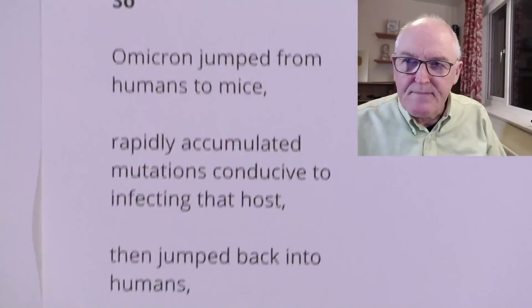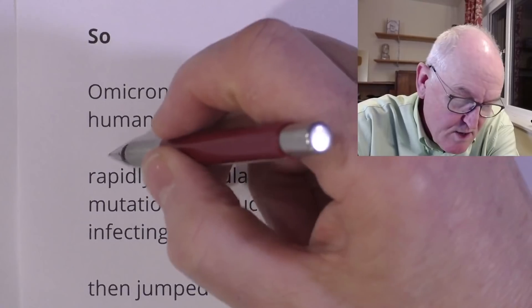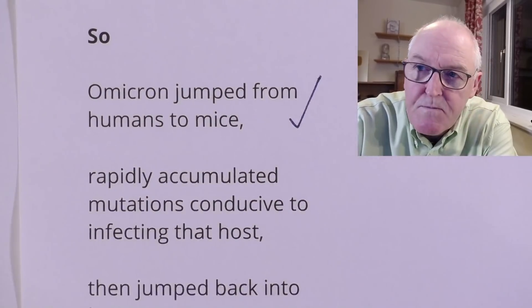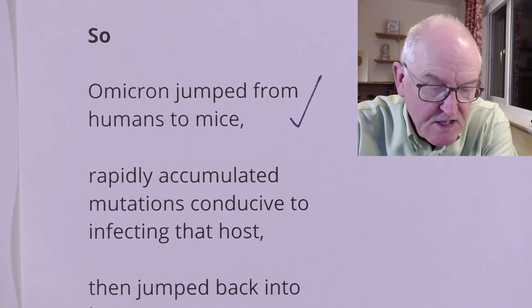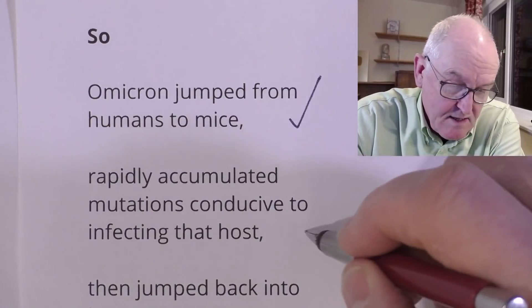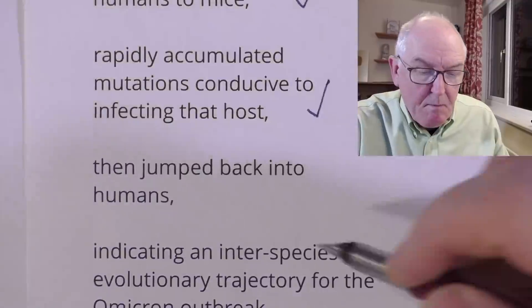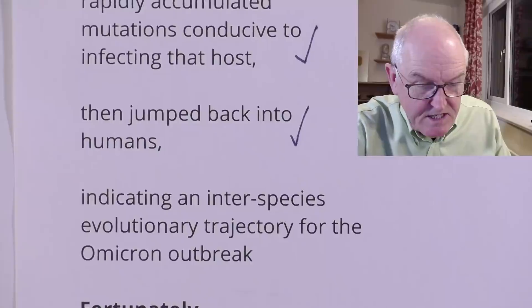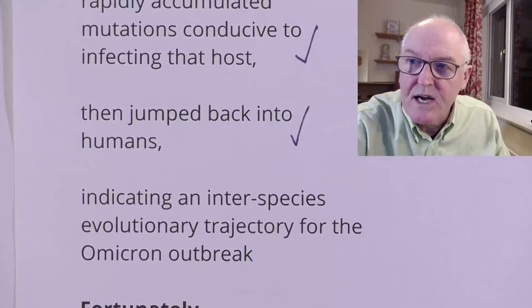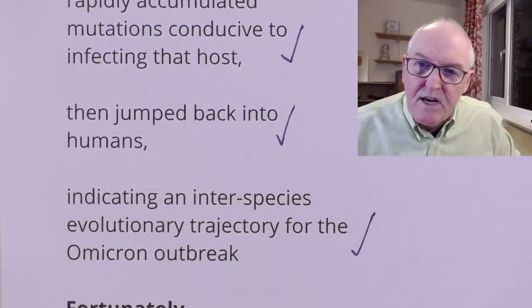So where does that leave us? Omicron likely jumped from humans to mice way back in early 2020. There was a rapid accumulation of mutations conducive to infecting mice. It then jumped back into humans, indicating an inter-species evolutionary trajectory of the Omicron outbreak. You might call this a reverse zoonosis — from humans into animals — and then a secondary infective zoonosis from mice back into humans.